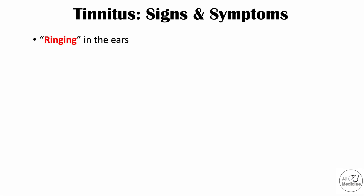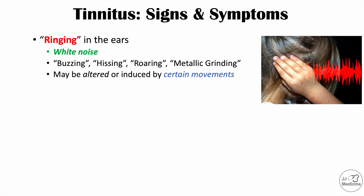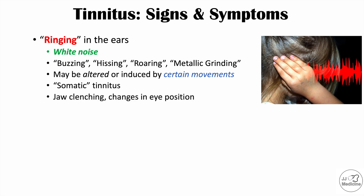Tinnitus is often described as a white noise — it can also be described as buzzing, hissing, roaring, metallic grinding, wind blowing, and other auditory sounds. In some cases, these sounds may be altered or induced by certain movements such as jaw clenching, changing eye position, or moving your neck. When that occurs, this is known as somatic tinnitus.